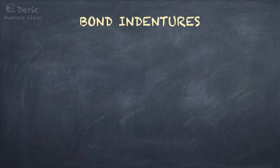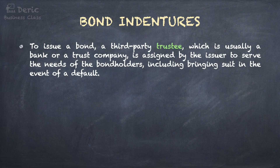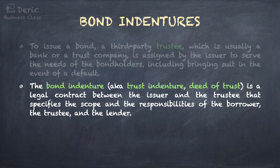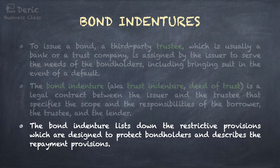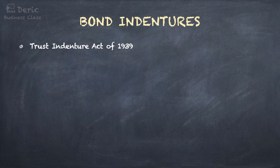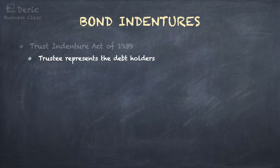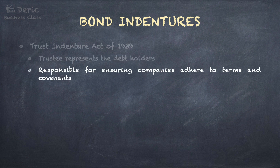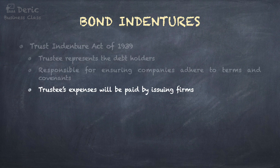For the issuance of bonds, bond indentures are important. In order to issue a bond, a third-party trustee — usually a bank or a trust company — is assigned by the issuer to serve the needs of the bondholders, including bringing suit in the event of a default. The bond indenture, also known as trust indenture or deed of trust, is a legal contract between the issuer and the trustee that specifies the scope and responsibilities of the borrower, the trustee, and the lender. The bond indenture lists restrictive provisions designed to protect bondholders and describes the repayment provisions. According to the Trust Indenture Act of 1939, the trustee represents the debt holders, is responsible for ensuring companies adhere to terms and covenants, and the trustee's expenses will be paid by the issuing firm.